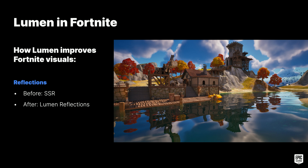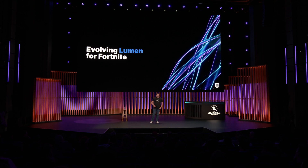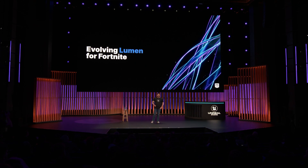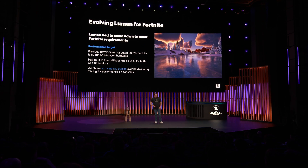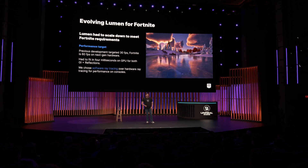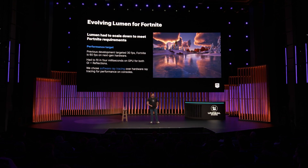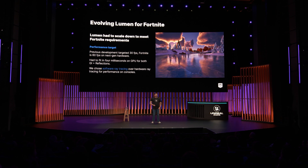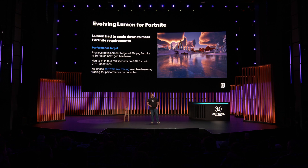Reflections on water are sharper and extend all the way to the edges of the screen. We had to face some challenges getting Lumen to scale to Fortnite's needs. Our previous showcases were well-optimized but done so to meet a 30 fps budget. For Fortnite we were targeting 60 fps on next-gen consoles, giving ourselves a modest 4-millisecond budget for GI and reflections together. After some early tests, we determined that Lumen software ray tracing was a better fit than Lumen hardware ray tracing on consoles due to its lower tracing costs. However, Lumen hardware ray tracing is still used on PC.